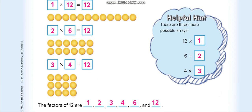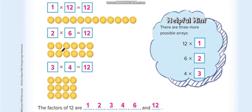Now, how do we write these factors? We write them in a U-shape. For 12, we have three factor pairs: 1×12, 2×6, and 3×4. We write the factors in a line in U-shape order: 1, 2, 3, 4, 6, and 12.